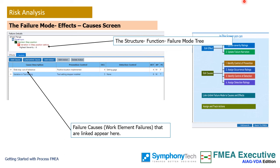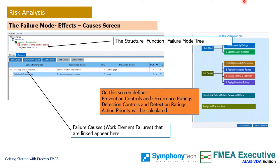Severity, occurrence, and detection ratings are all defined on a scale of 1 to 10 as in the prevalent FMEA practice. The former practice of calculating risk priority number, however, has been made obsolete. Instead, an action priority is computed based on a well-defined logic in the FMEA handbook. Action priority is defined as either low, medium, or high. FMEA executive evaluates and displays action priority based on the highest severity rating among all effects and occurrence and detection ratings for the causes.